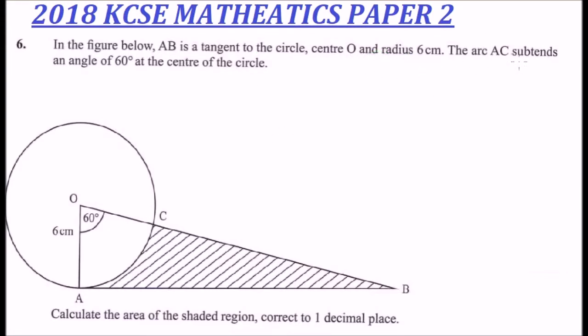The arc AC subtends an angle of 60 degrees at the center of the circle. We have the diagram here showing the angle, the radius, the tangent, and we are required to calculate the area of the shaded region.